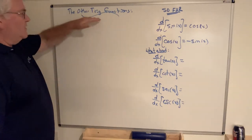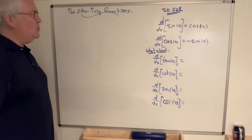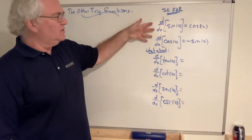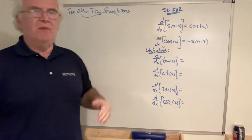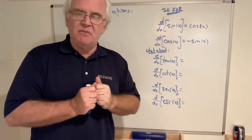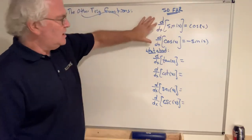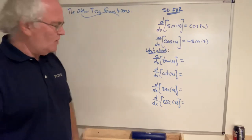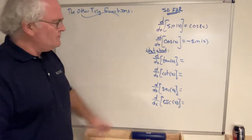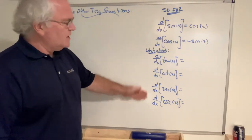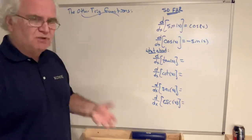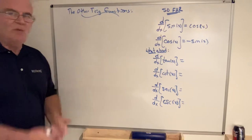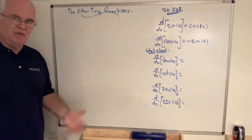At long last, we're going to get to the other trig functions. We've done sine and cosine — those derivatives followed from our special limits when we computed them with the difference quotient. But we left out these four, and you might be wondering why. Well, it's much more straightforward now that we have the quotient rule. Let's put it to use.